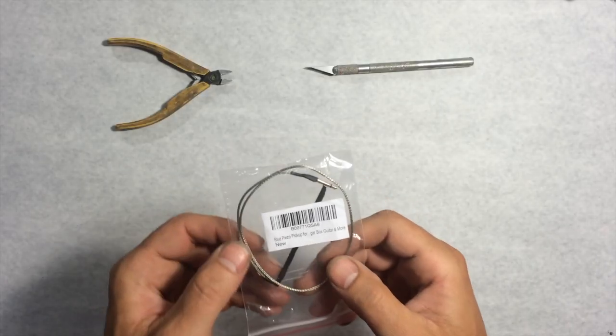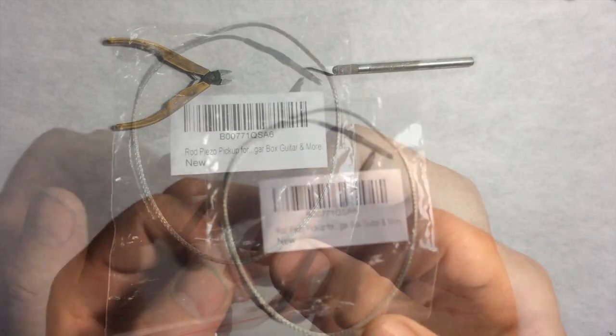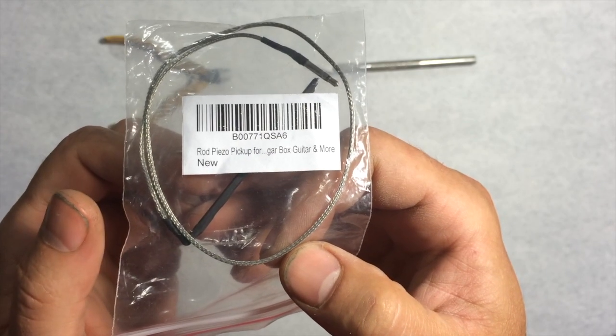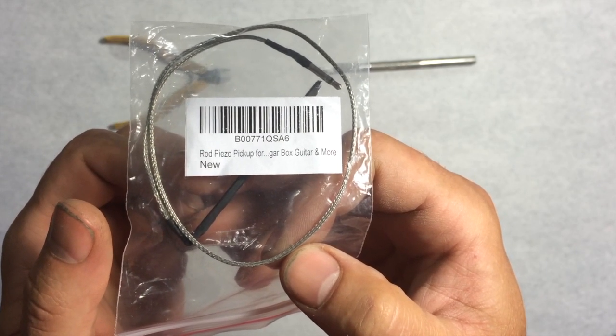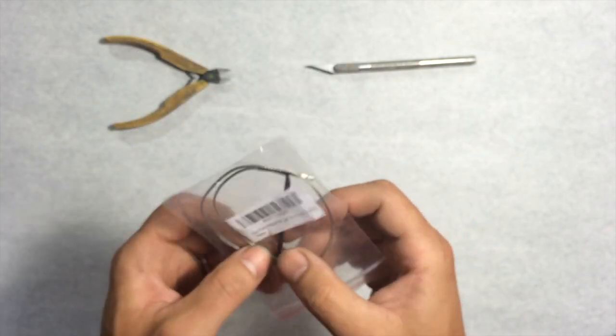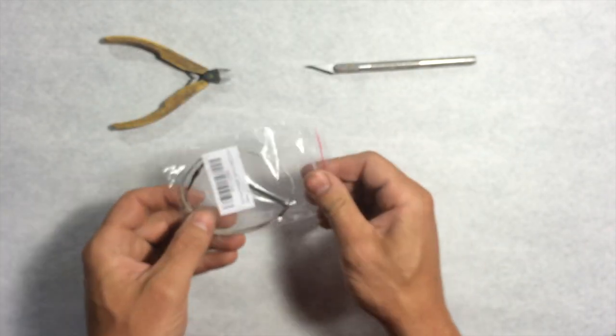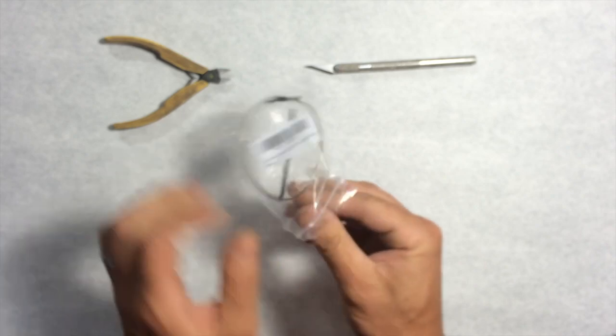Alright, today I'm going to do a quick teardown of a Rod Piezo pickup for a cigar box guitar. Often they're a little round disc. This one's a little different shaped so I thought I'd see what it was made of.